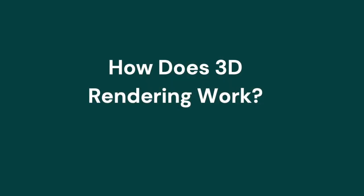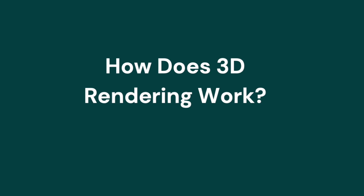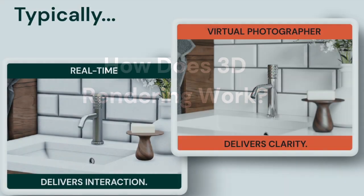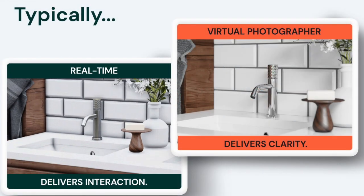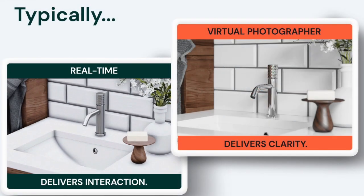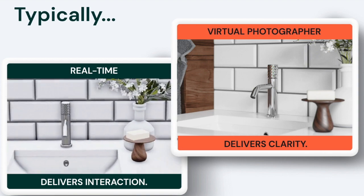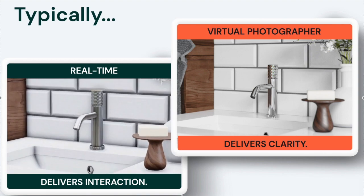Welcome back. Today we are going to talk about how 3D rendering works and what exactly the process involves. The 3D rendering process involves a combination of strategy, software, and artistry. It's not enough to have a plan for which items you want to visualize in 3D — you also have to have the right tools and enough experience to make the final product look appealing to viewers.